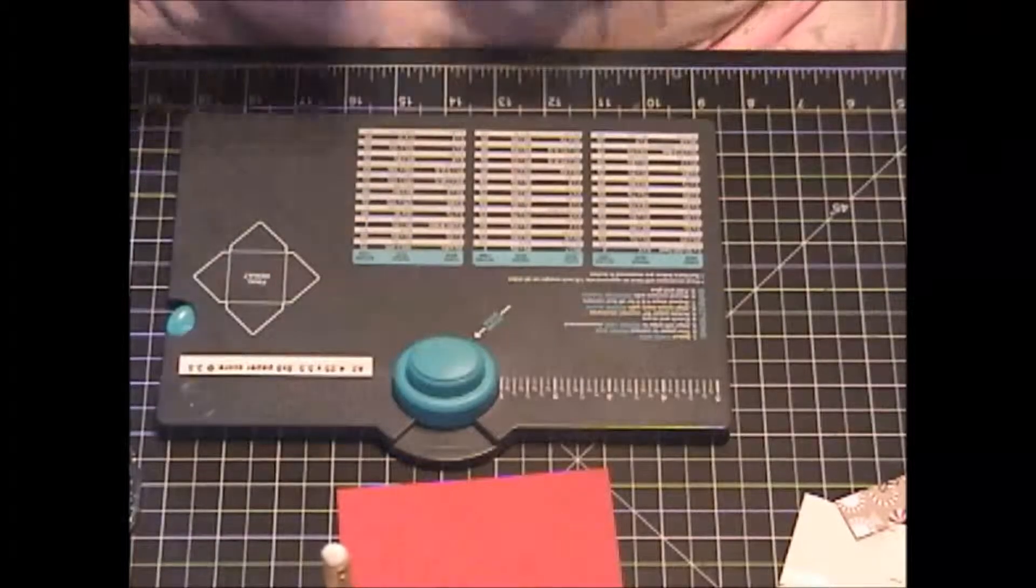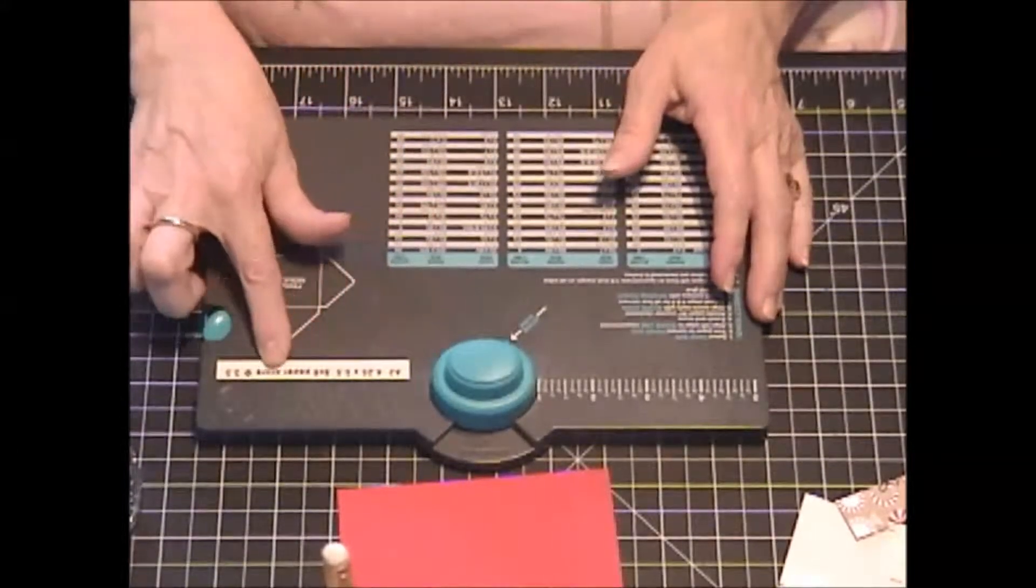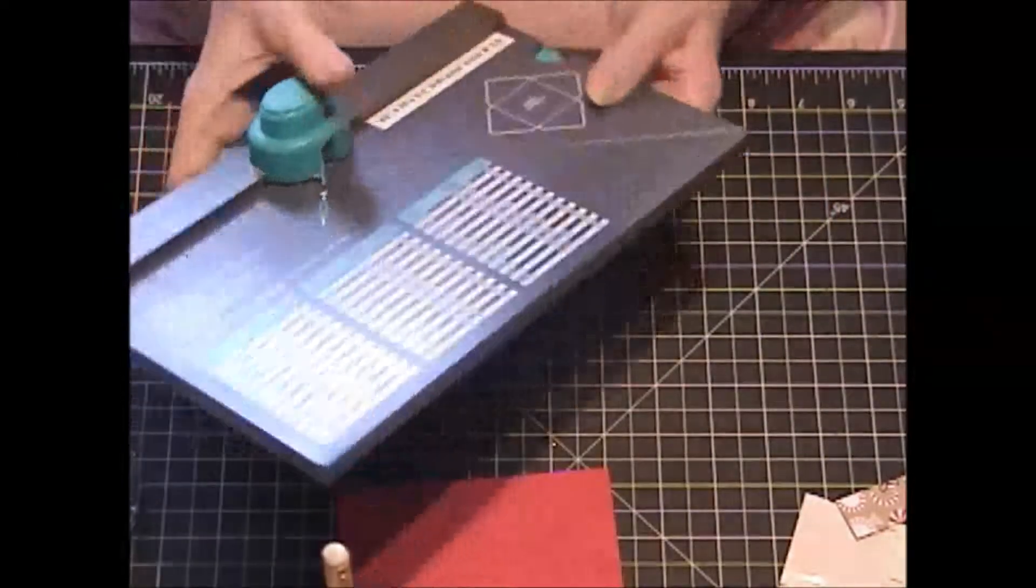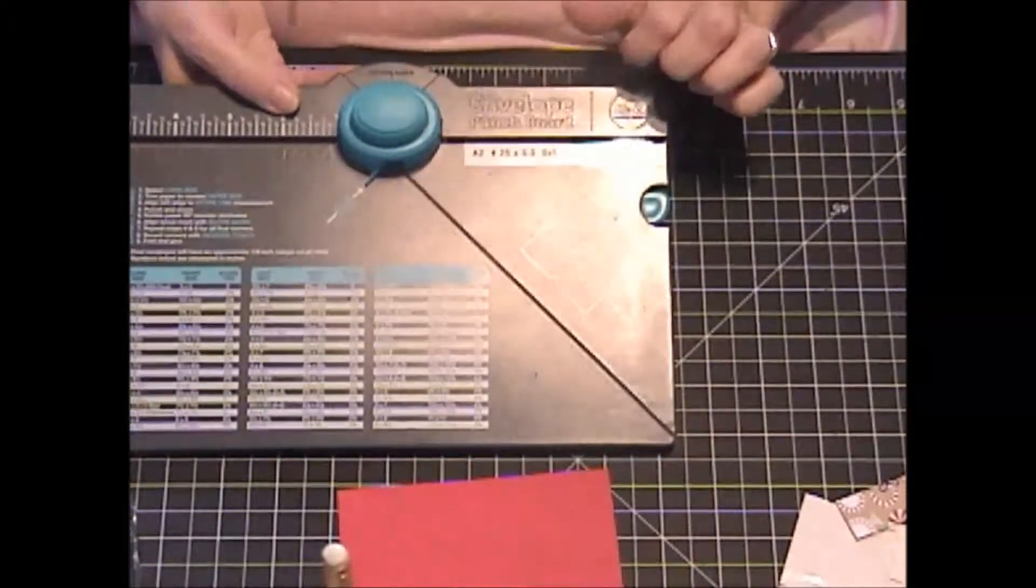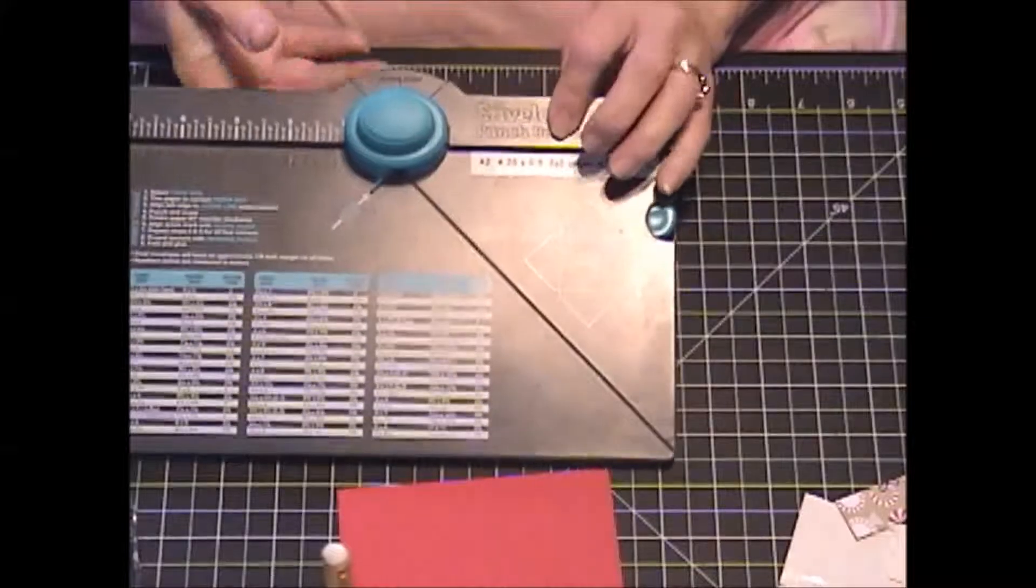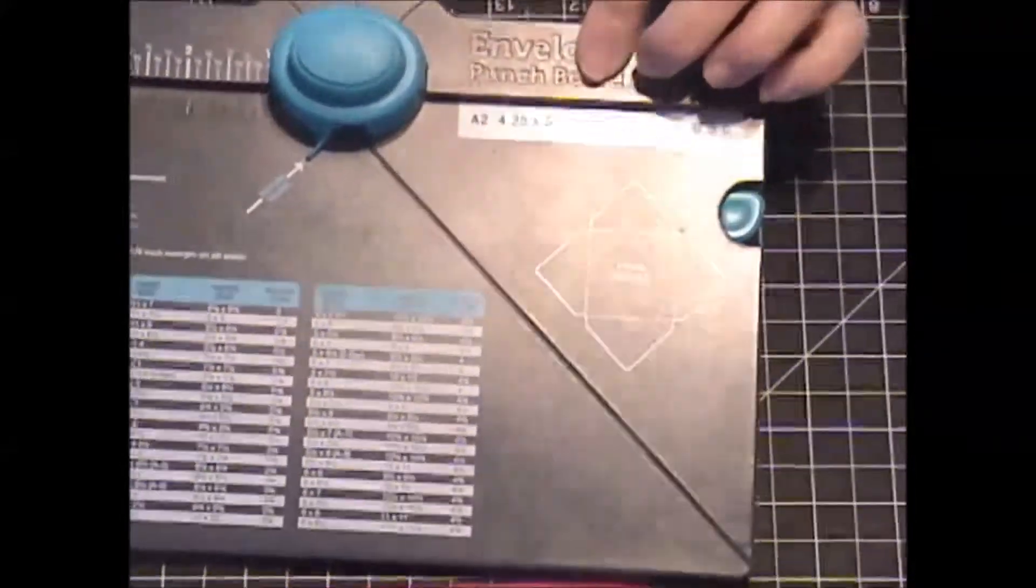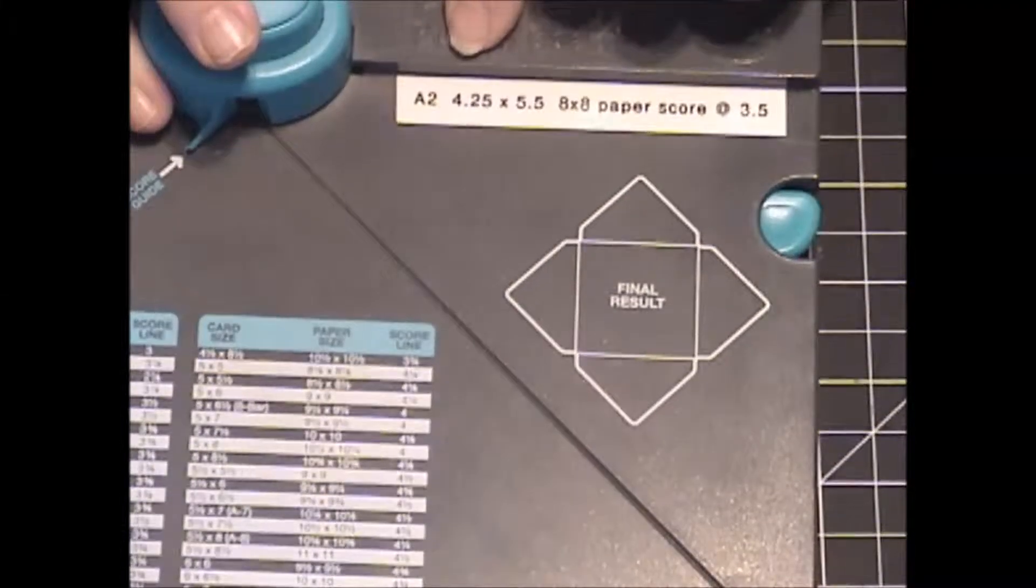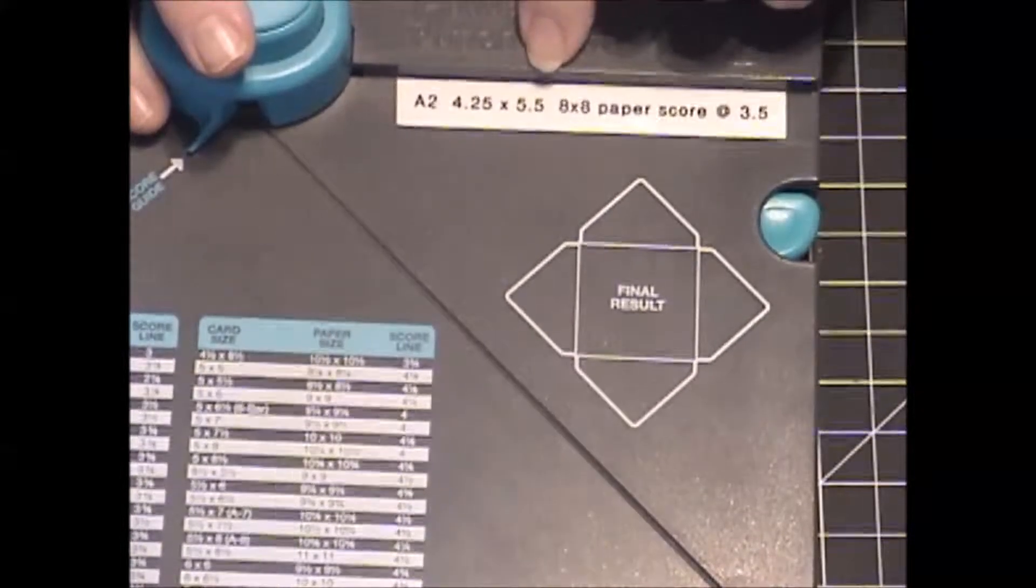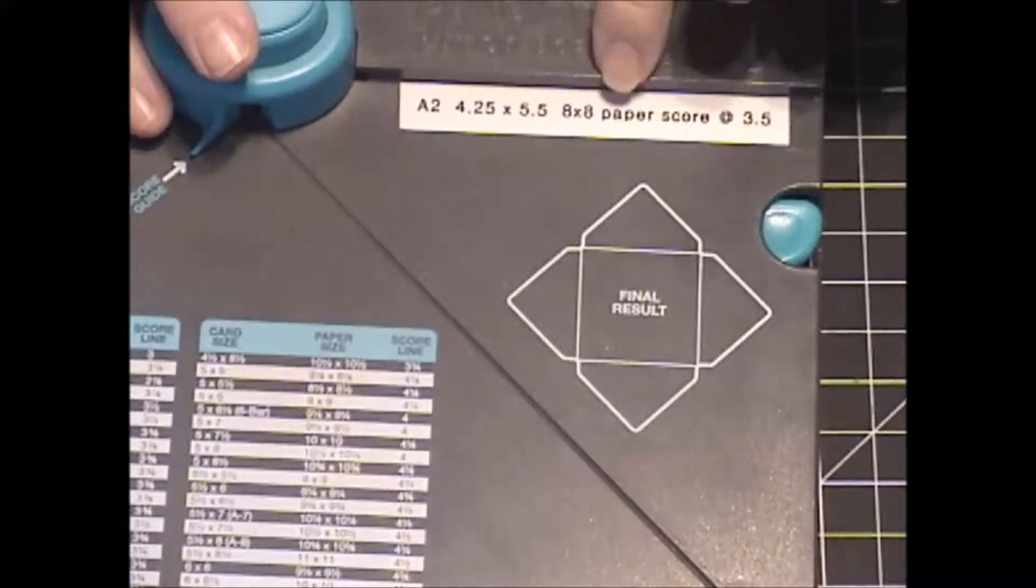The We Are Memory Keepers one does not have this, so what I've done is I've made a little label and put it on mine as to the correct size paper I need and where to score it. And I also put down the size of the card. It says A2, which is a regular card. Our A2 cards are four and a quarter by five and a half, and the paper size I need is eight by eight, and I would score at three and a half.